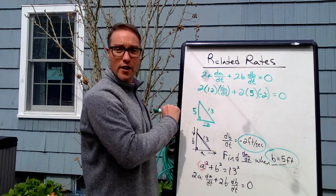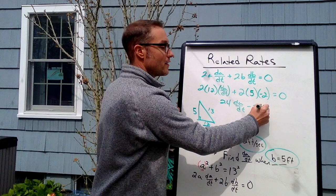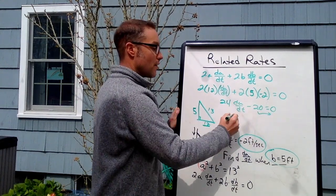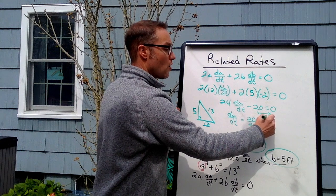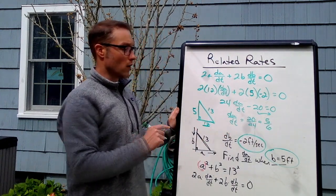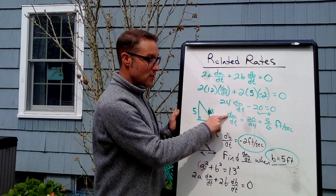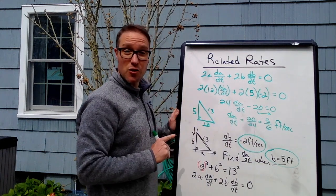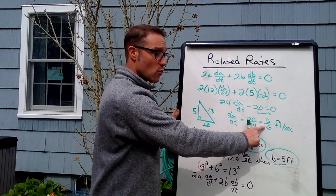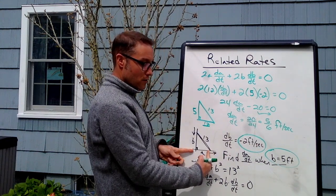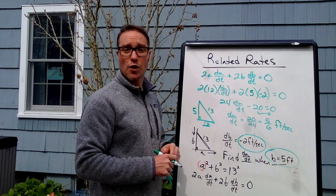Everything is plugged in except for what we're looking for, so let's solve. 2(12)(dA/dt) + 2(5)(−2) = 0, giving 24(dA/dt) − 20 = 0. Add 20, divide by 24: dA/dt = 20/24 = 5/6. Since dB/dt was in feet per second, dA/dt is also 5/6 feet per second. Do a check to make sure the sign makes sense — this came out positive, and yes, A is growing as this motion takes place. If your sign doesn't match, check what you plugged in and make sure the signs were correct.